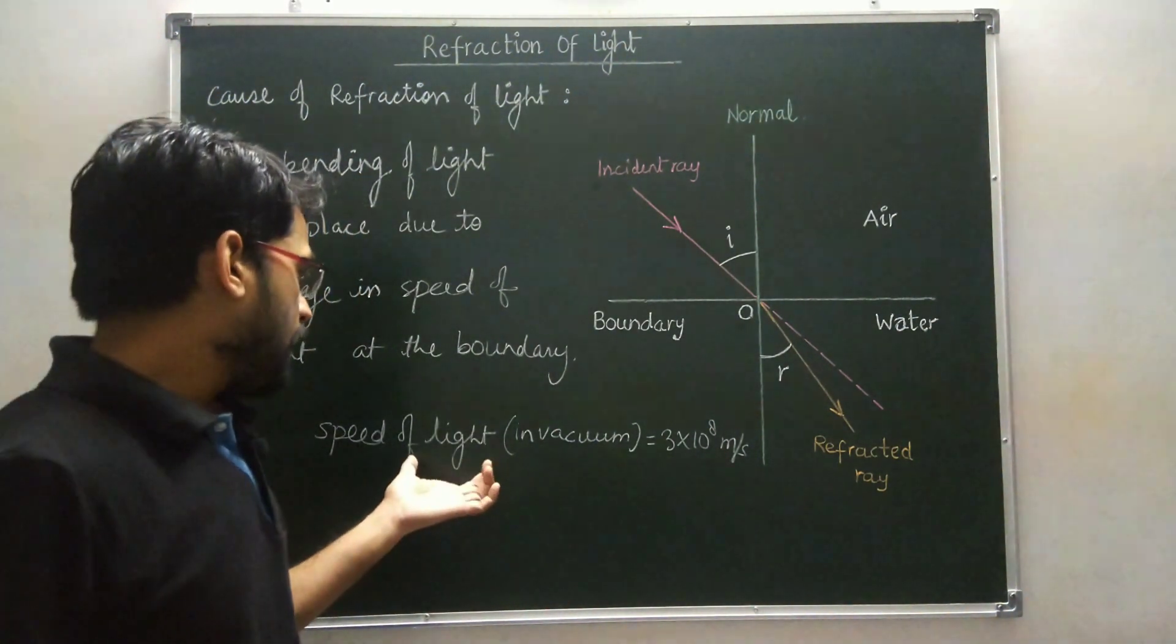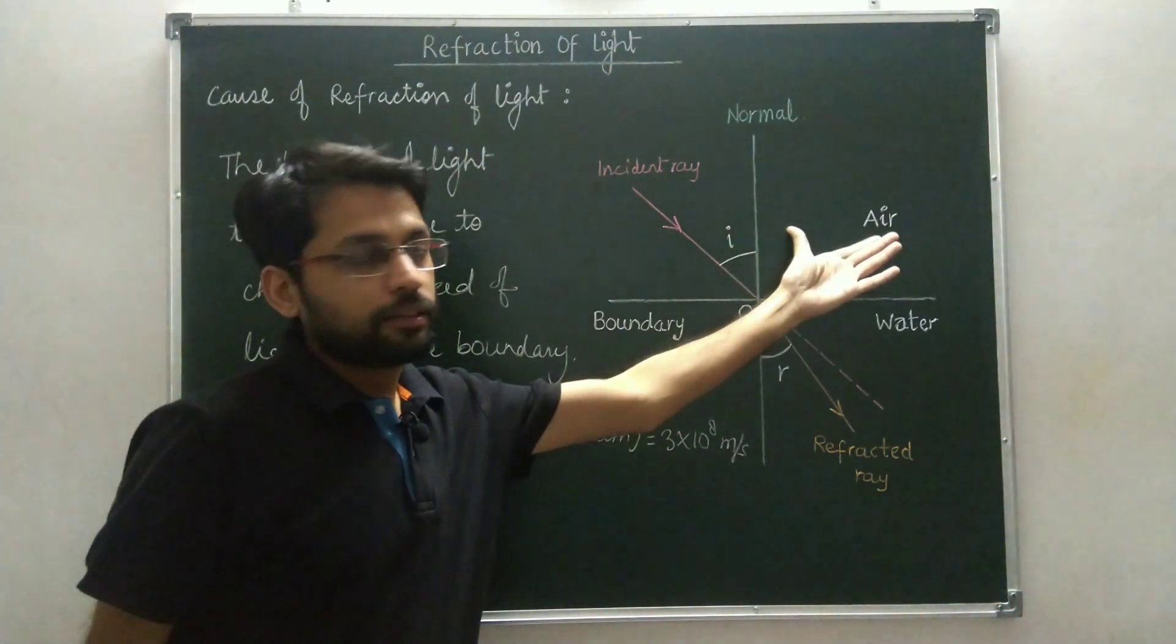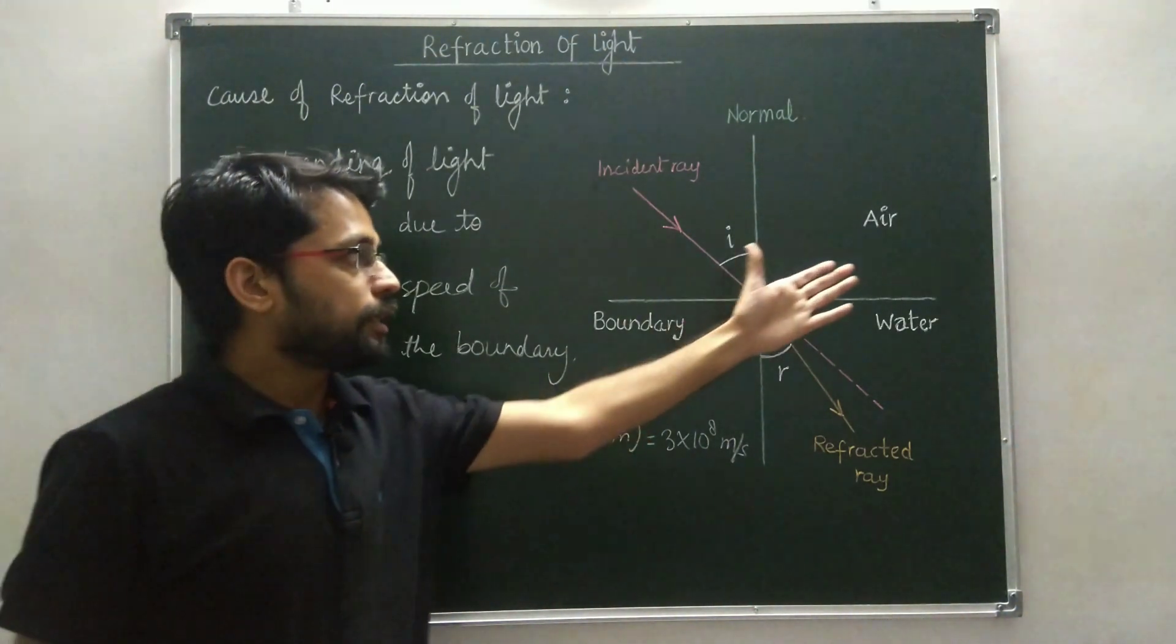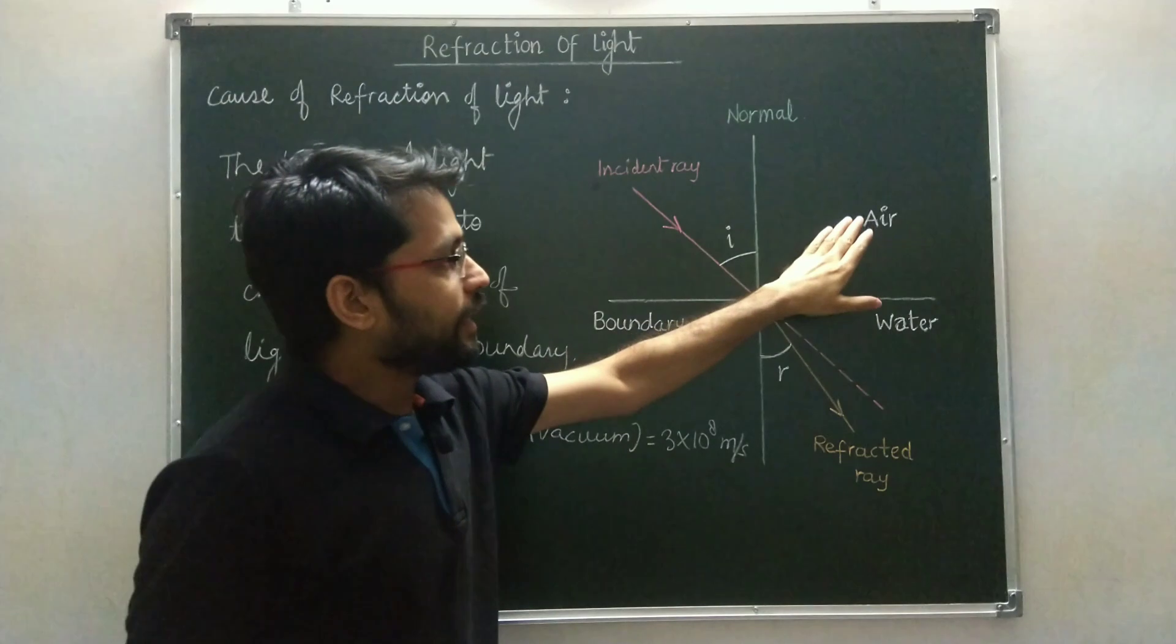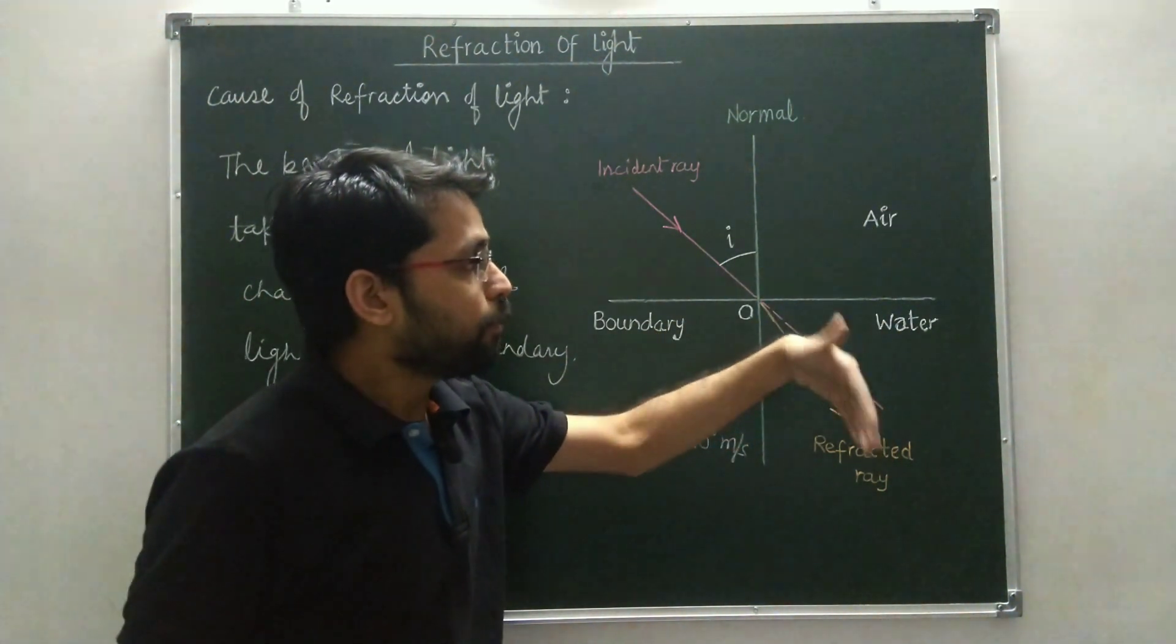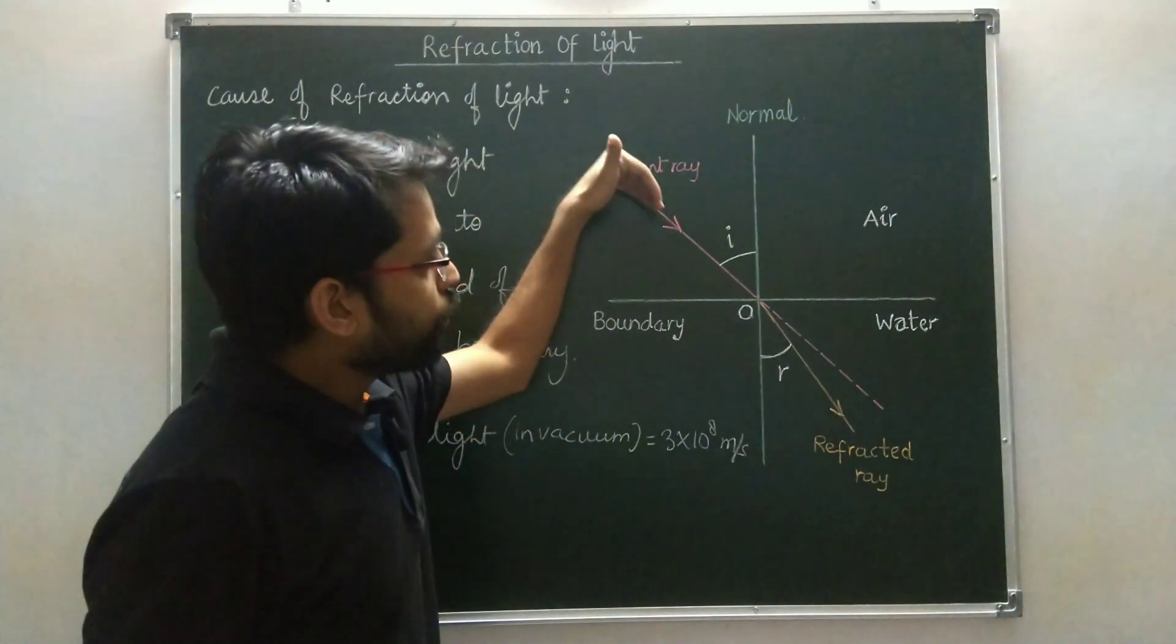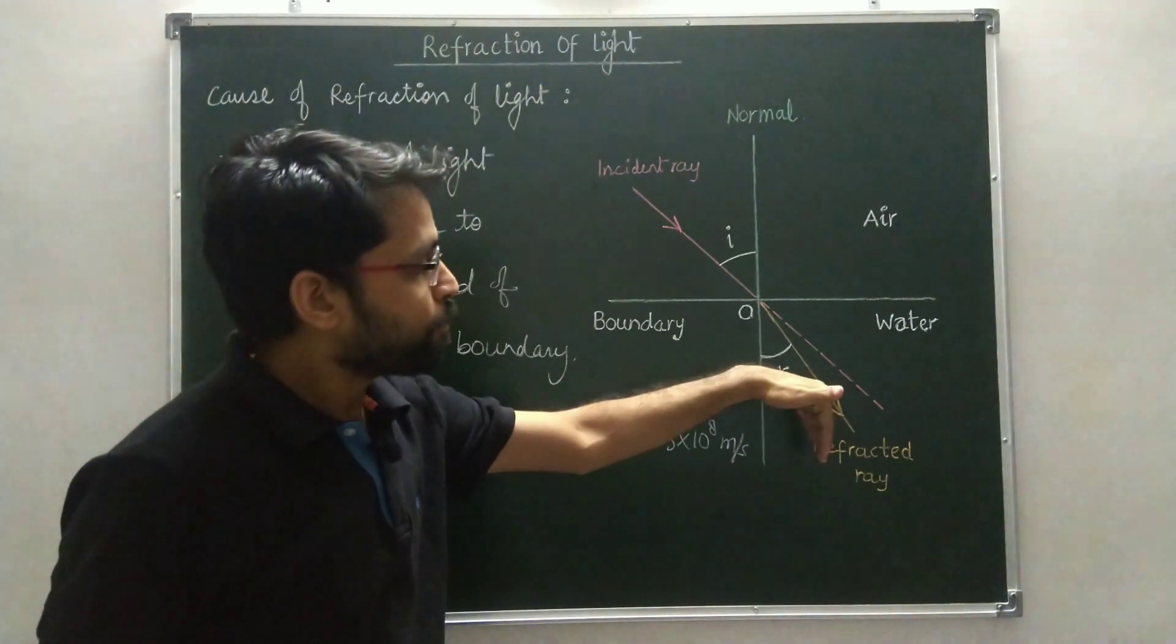When light enters from vacuum to air, the air is denser than vacuum, so the speed of light decreases. Now when light enters from air to water, water is more denser than air, so the speed of light ray decreases further.